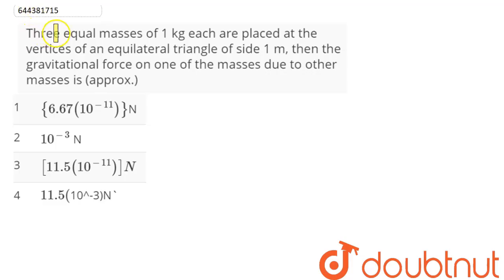Question is: three equal masses of 1 kg each are placed at the vertices of an equilateral triangle of side 1 meter. Then the gravitational force on one of the masses due to other masses is approximately.